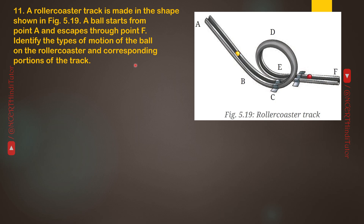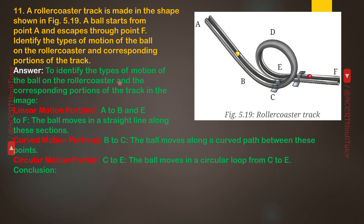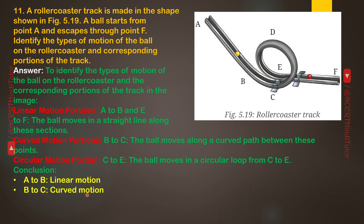Question 11: A roller coaster track is made in the shape shown in figure 5.19. A ball starts from point A and escapes through point F. Identify the types of motion of the ball and the corresponding portions of the track. Answer — Linear motion: portions A to B and E to F. Curved motion: portions B to C. Circular motion: portion C to E. Conclusion: A to B linear, B to C curved, C to E circular, E to F linear.